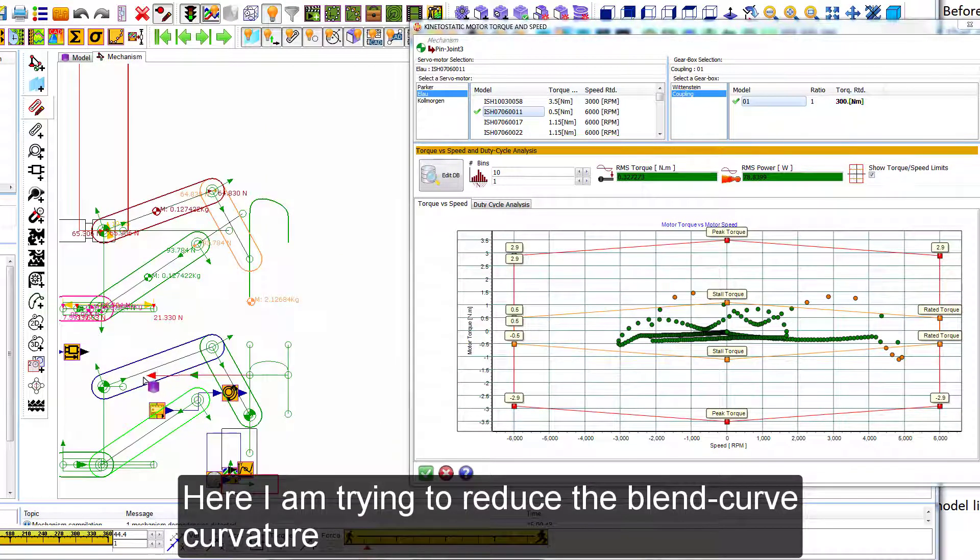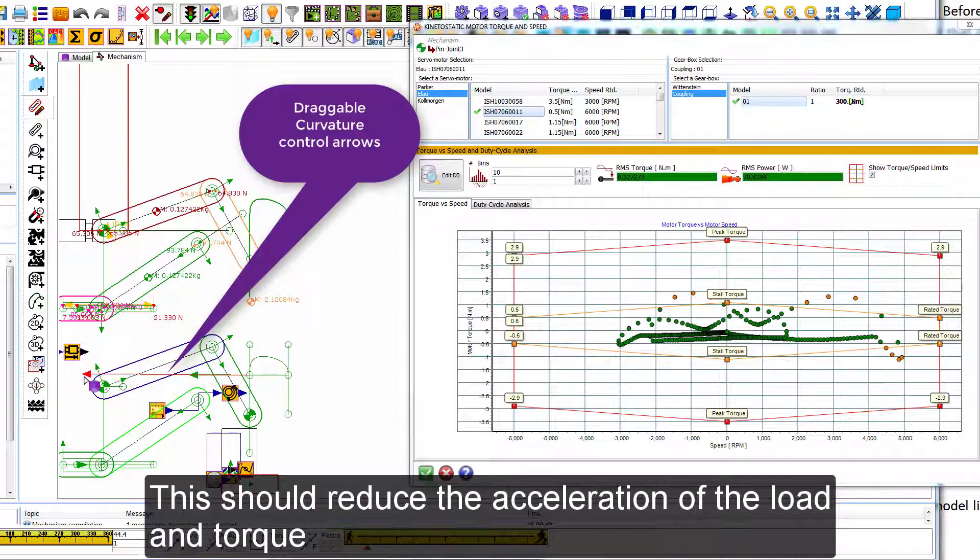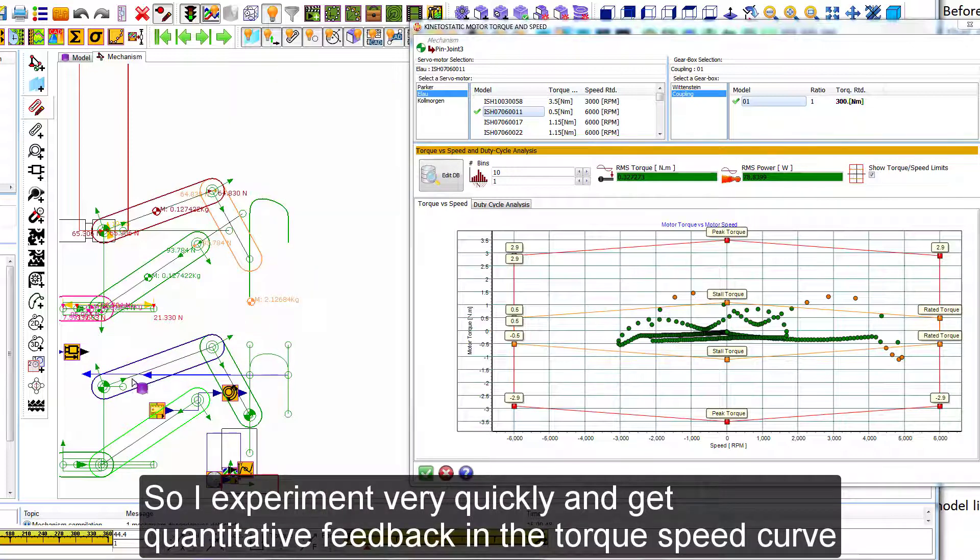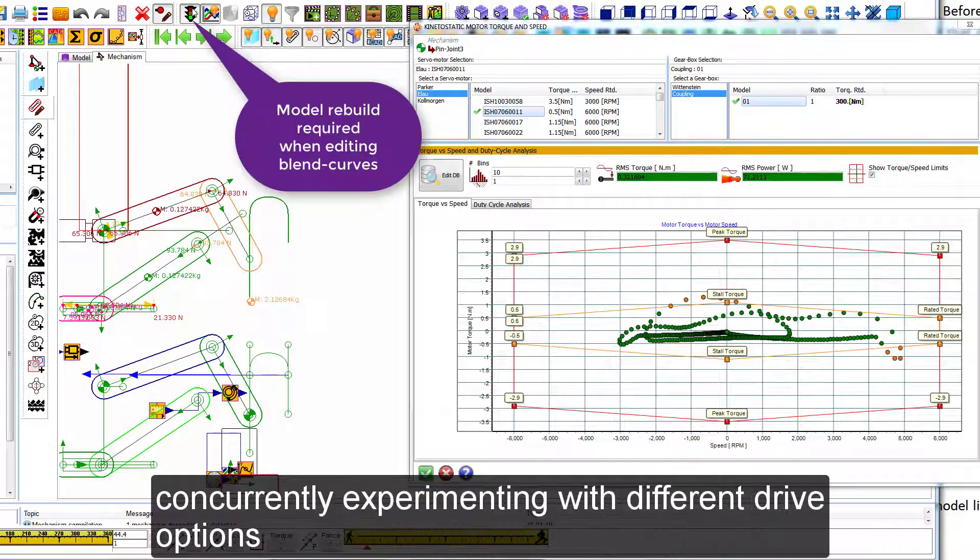Here I am trying to reduce the blend curve curvature. This should reduce the acceleration of the load and torque. So I experiment very quickly and I can get quantitative feedback in the torque speed curve, at the same time experimenting with different drive options.